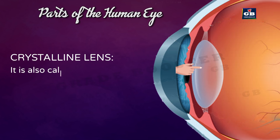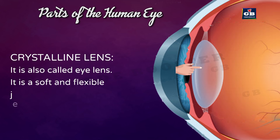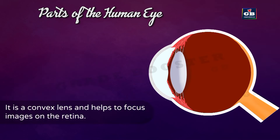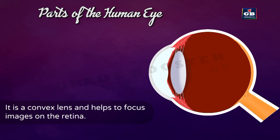Crystalline lens, also called the eye lens. It is a soft and flexible jelly-like material made up of proteins. It is a convex lens and helps to focus images on the retina. The lens is transparent and flexible, meaning light can easily pass through it and at the same time its shape can be modified.